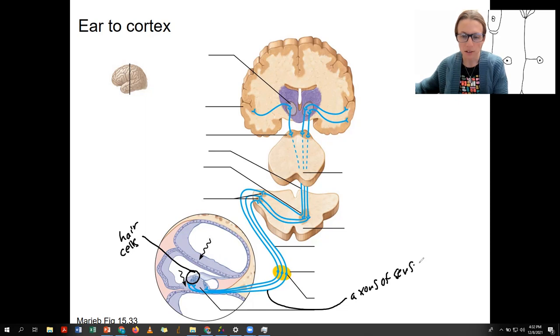These sensory neurons, the axons, form the vestibular cochlear nerve, the cranial nerve, along with vestibular information from the vestibular apparatus related to balance.